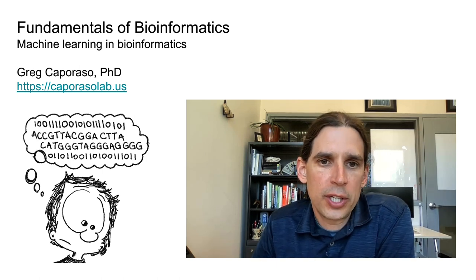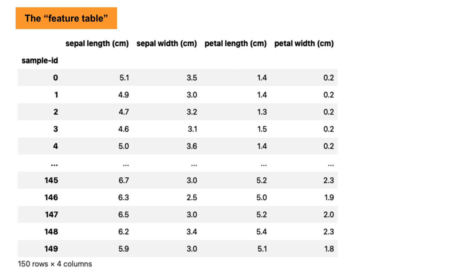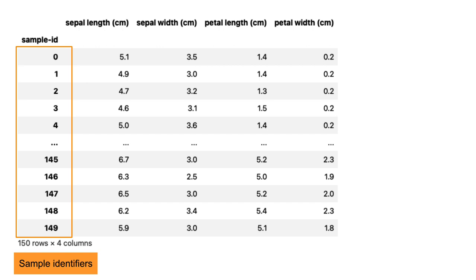When I think about machine learning I typically start with thinking about the data, and I think that's a good place for us to jump in. Almost always the data structure that will be very central to your machine learning analysis is what's called a feature table. You've probably already run into this in this course — it's the same language used in QIIME 2 for describing our sample-by-feature matrices. Here is an example from a famous dataset widely used in teaching machine learning: this is called the iris dataset.